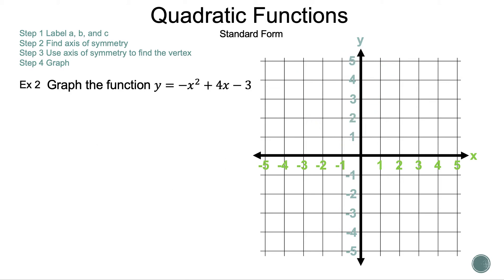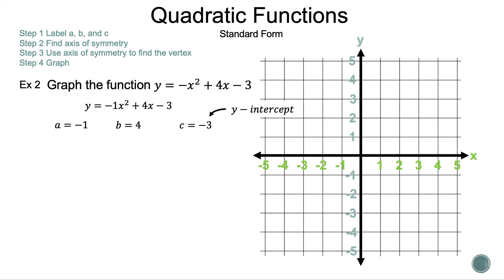Let's move on to example 2. Graph the function y is equal to negative x squared plus 4x minus 3. First, let's rewrite the function so we can show our work. We have added any hidden numbers so we can more easily determine the a, b, and c values. This time we have put a negative 1 in front of the x squared. So a is negative 1, b is 4, and c is negative 3. The c value tells us the y-intercept. When we substitute 0 into the function, the result is negative 3. Let's go ahead and plot the point 0, negative 3 on the graph.